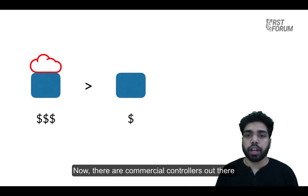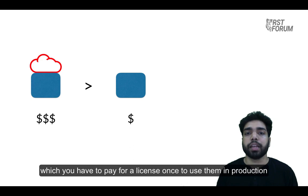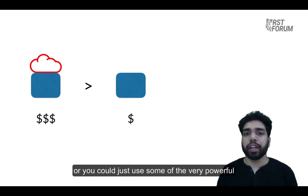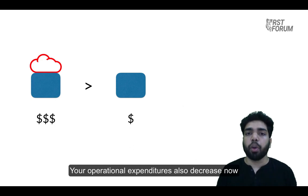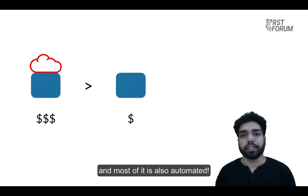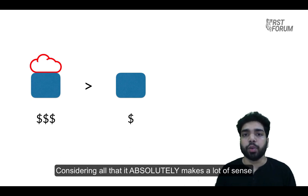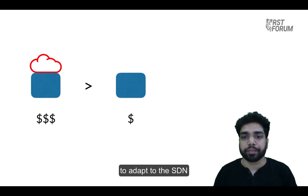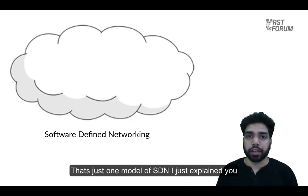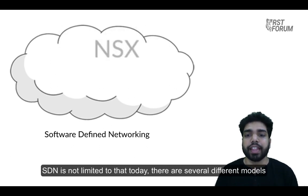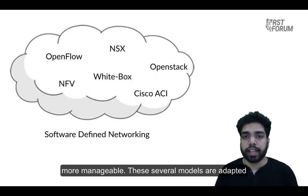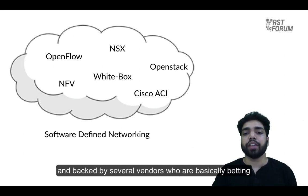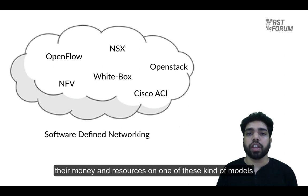There are commercial controllers out there which you have to pay for a license to use in production, or you could just use some of the very powerful open source and free controller softwares like ODL and ONOS. Your operational expenditures also decrease, because you only have to operate the controllers and most of it is also automated. Considering all that, it absolutely makes a lot of sense to adapt to SDN.